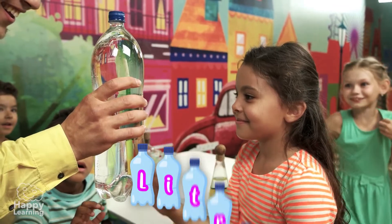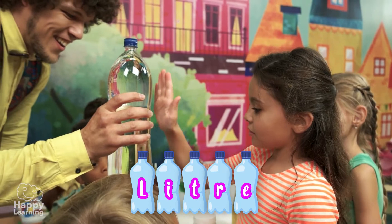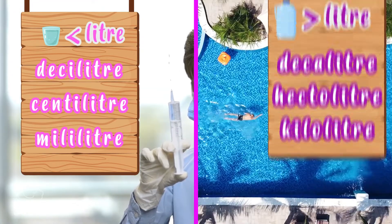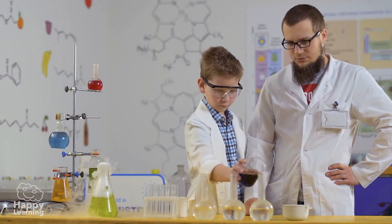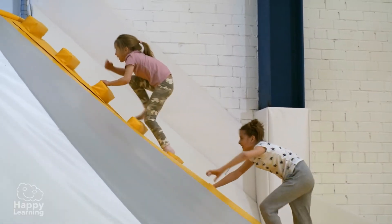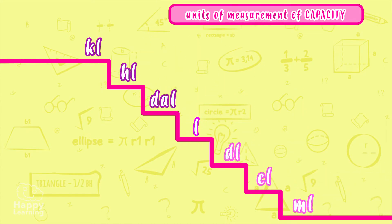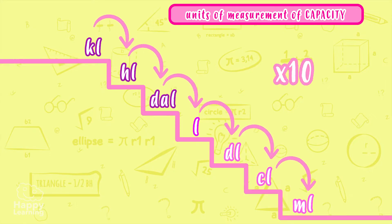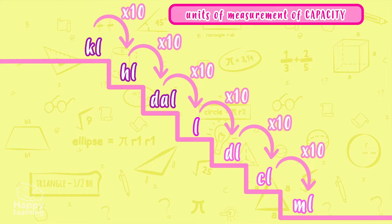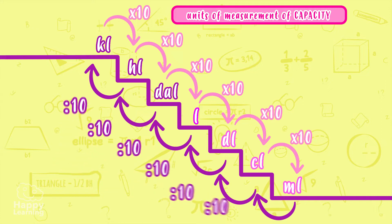Remember that the liter is the most important unit of measure for measuring capacity, and that there are smaller and larger units. To learn how to move from one unit to another, let's learn a ladder trick. We place the units of capacity on a ladder. When we want to move from one unit to another, if we go down, we multiply by 10 for each step down. And if we go up, we divide by 10 for each step up.